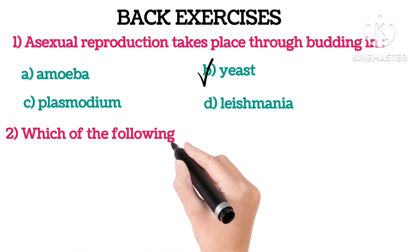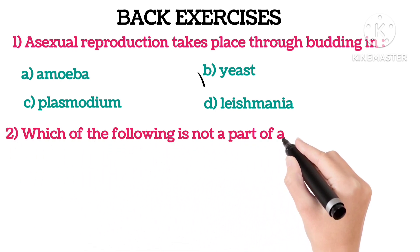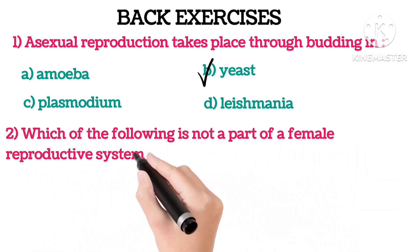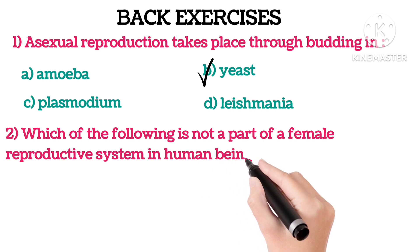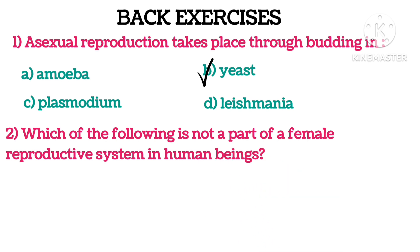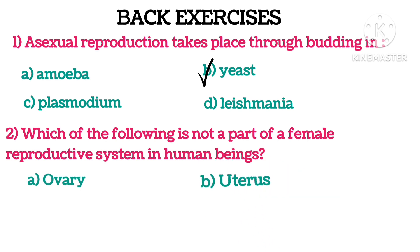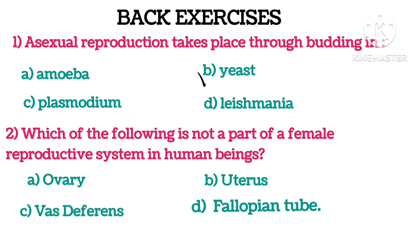Second: Which of the following is not a part of the female reproductive system in human beings? A. Ovary, B. Uterus, C. Vas deferens, D. Fallopian tube. The correct answer is C. Vas deferens.